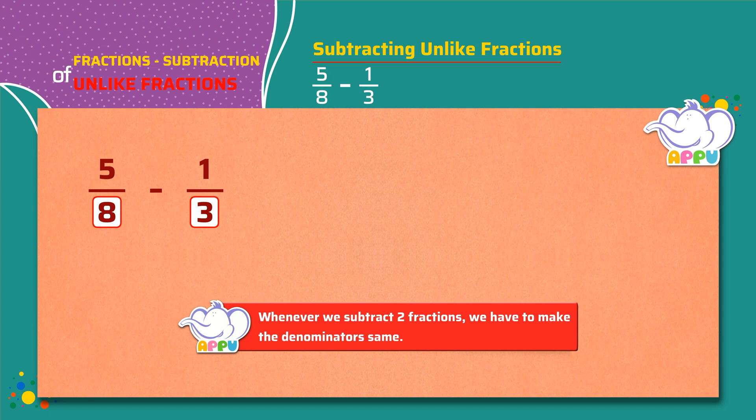We multiply the denominator of the first fraction with the denominator of the second fraction. That is 8 times 3. Next, we multiply the denominator of the second fraction with the denominator of the first fraction. That is 3 times 8.